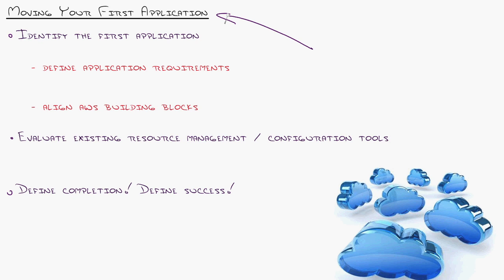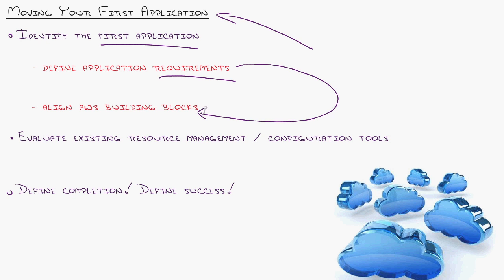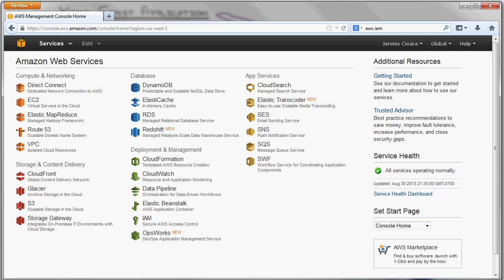Let's get practical with moving your first application. Number one, you need to identify what that application is and its requirements, because you want to be able to align it with the AWS building blocks. Now, what does that mean? When you go to Amazon Web Services, this is what you see.